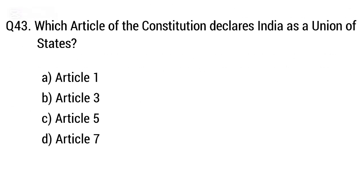Question 43: Which article of the Constitution declares India as a Union of States? The right answer is option A: Article 1.